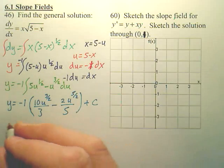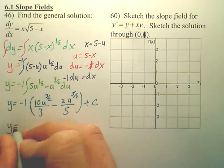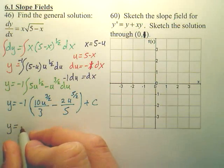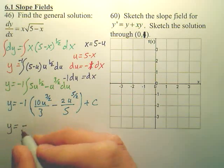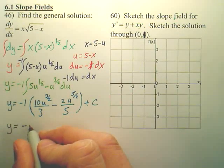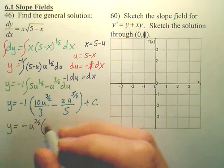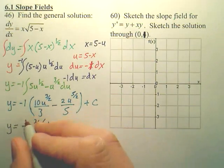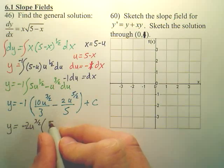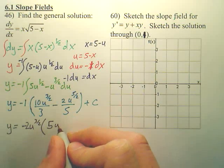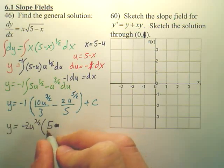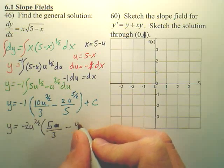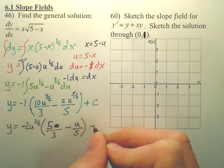Plug your u back in, and you probably could simplify this quite a bit. I'm going to, because the negative, actually I'll leave the negative out, that would be a negative. You could pull out a u to the 3 over 2, and that would leave you, you could also pull out a 2, probably leave us a 5 over 3, minus u over 5, plus c.